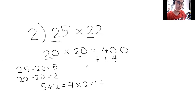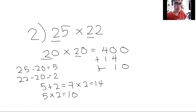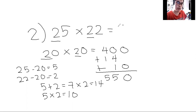Then we multiply 5 times 2 for the units digit, which is 10. We place it in the units digit. Now we add them all — 4 plus 1 is 5, then 4 plus 1 again is 5. So the answer is 550. Shall we move to the 30s?